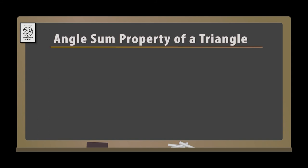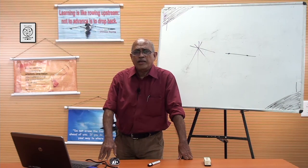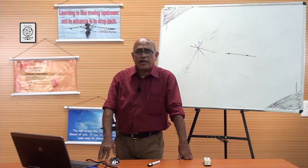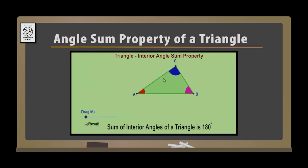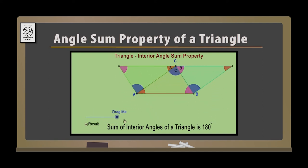Then we move on to the angle sum property of a triangle. In any triangle there are three angles — that's why we call it a triangle. But the sum of the three angles of the triangle always adds up to 180 degrees. We have an applet here — a triangle A, B, and C. Angle A is orange colored, angle B is colored pink, and angle C is colored blue. The sum of the three angles always adds up to 180 degrees. If I drag this, you will find the three angles change to form 180 degrees — a straight angle.